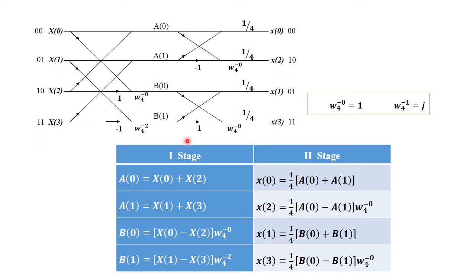We are going to look at diagrams for the four-point inverse DIT FFT calculation as well as for the eight-point DIT FFT calculation. For the four-point inverse DIT FFT, inputs are in the frequency domain and the output is in the time domain. There is a scaling factor as per the IDFT formula. The complete diagram appears as an exact mirror representation of the DIT FFT with inverted sign of the twiddle factor.